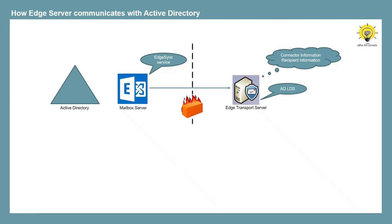This one-way replication of recipients and configuration information is achieved by Edge subscription. Edge subscription creates secure and automatic replication of information from Active Directory to ADLDS — Active Directory Lightweight Directory Services — that is running on the Edge server. We will talk about these concepts practically as well and things will be more clear.